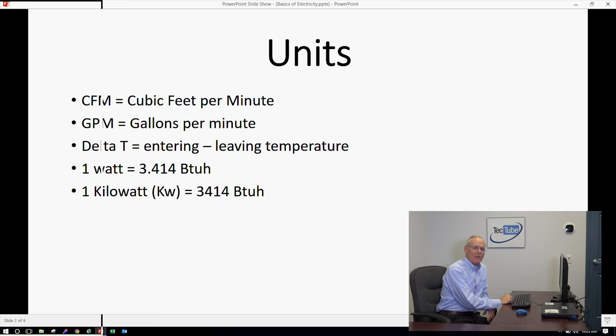Some of the units we have to talk about are CFM, cubic feet per minute, and GPM, gallons per minute. Delta T is the entering temperature minus the leaving temperature. One watt is 3.414 BTUs and one kilowatt is 3414 BTUs.